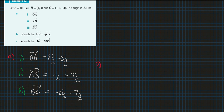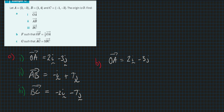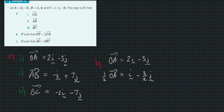Part B: find F such that O to F equals half of O to A. Since O to A equals two I minus three J, then half of that equals I minus three-halves J. So if half of O to A equals O to F, that means F is the point with coordinates one and minus three-halves.